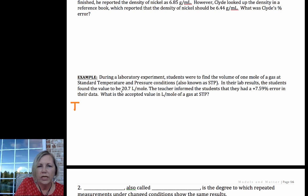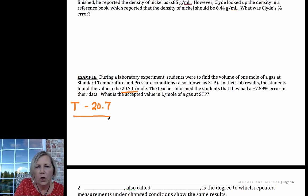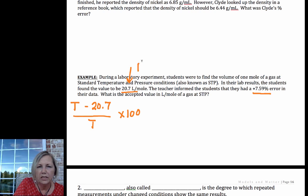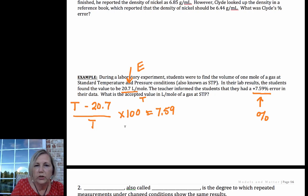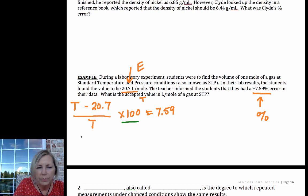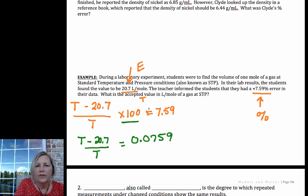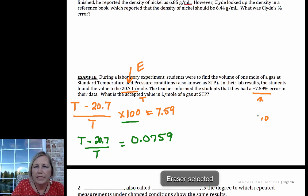This next problem requires some algebra. The true value is our unknown. In the experiment they found the experimental value to be 20.7, there's a positive percent error, and we divide by the true value times 100. To solve, we first divide both sides by 100, bringing the 100 to the right-hand side. That gives us (true minus 20.7) over true equals 0.0759.